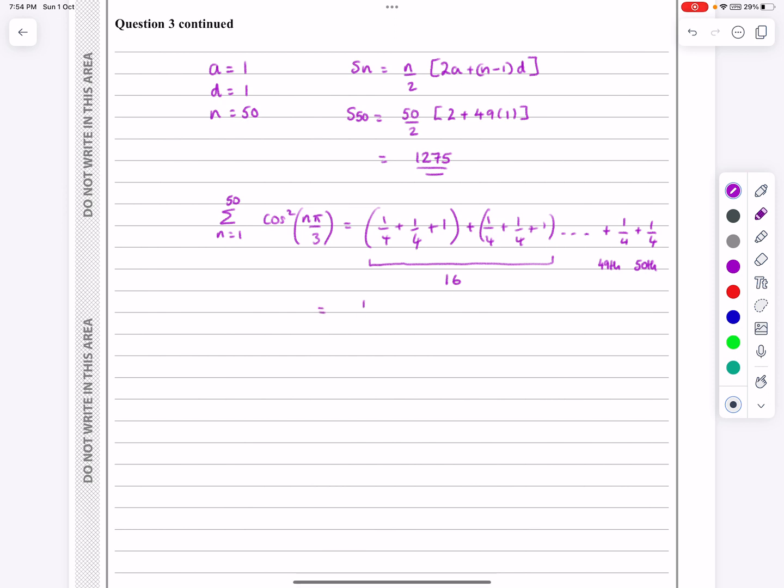Well, it's just 16 lots of a quarter plus a quarter plus 1. And then add on another quarter plus a quarter. Well, you can just do all that. Just multiply all that out and work that out. It works out to something relatively straightforward. That works out to be 49 over 2. So that's the second bit.